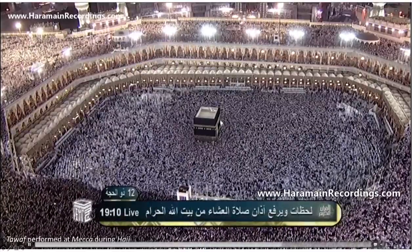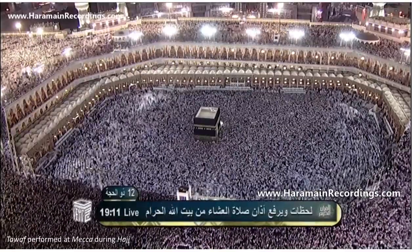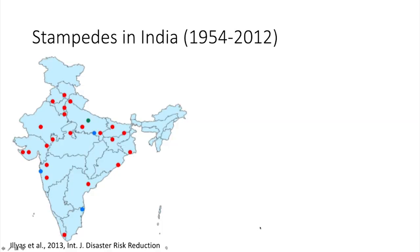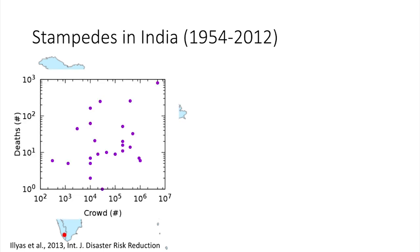When you have people packed into this scale there are many things that could go wrong — stampedes make news quite a bit. Looking at the last 50-odd years, a quick view of fatality versus the actual crowd gathered shows very weak correlation at best. What this suggests is that the actual number of people gathered into an enclosure is not really the problem; it is the dynamics of the crowd that seems to make a difference.